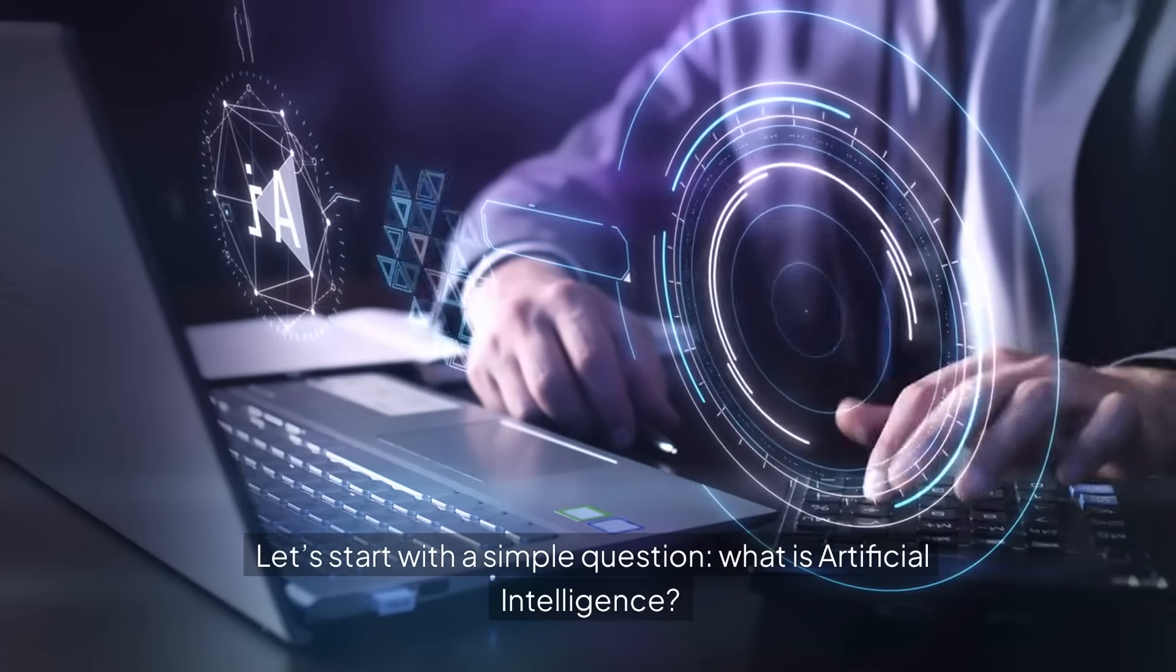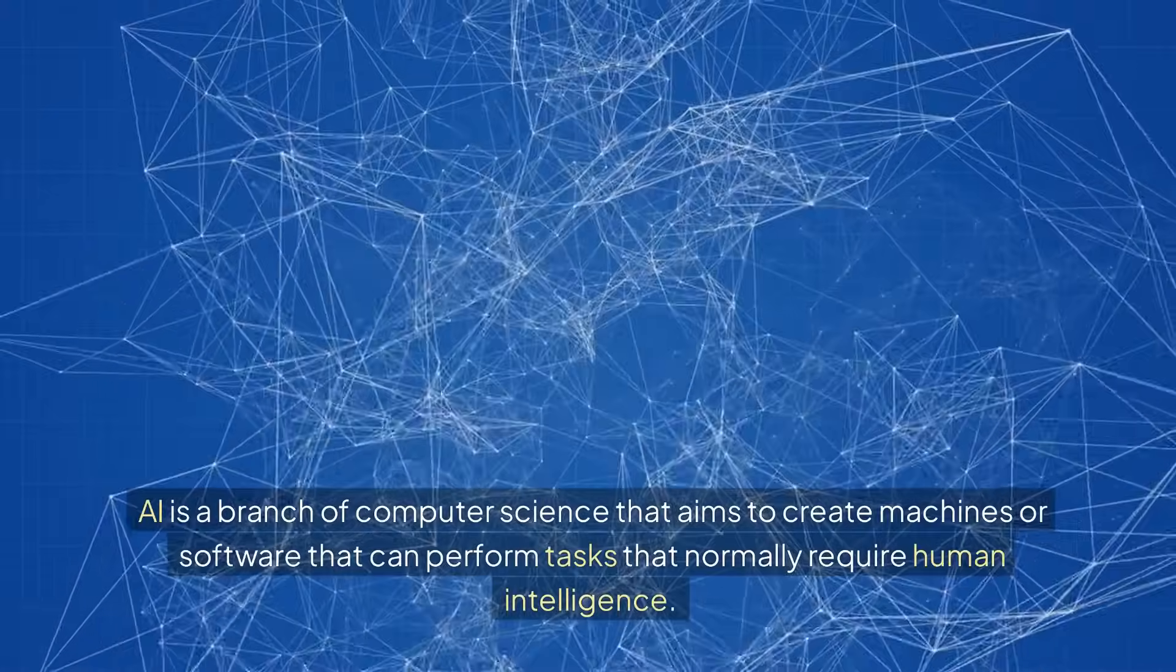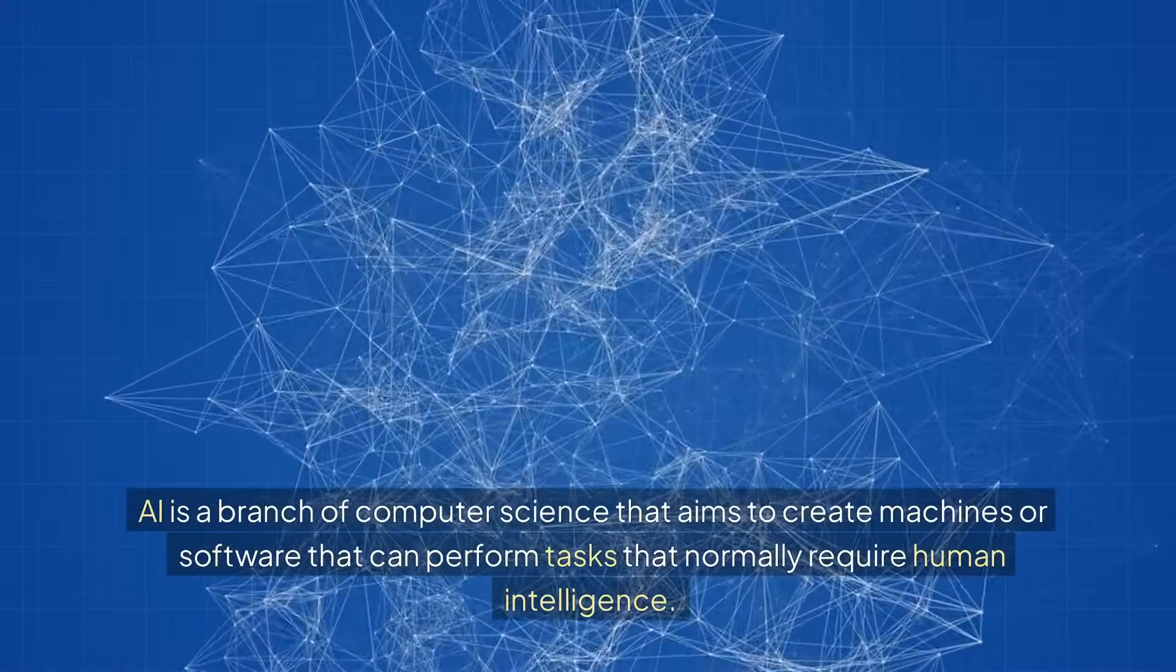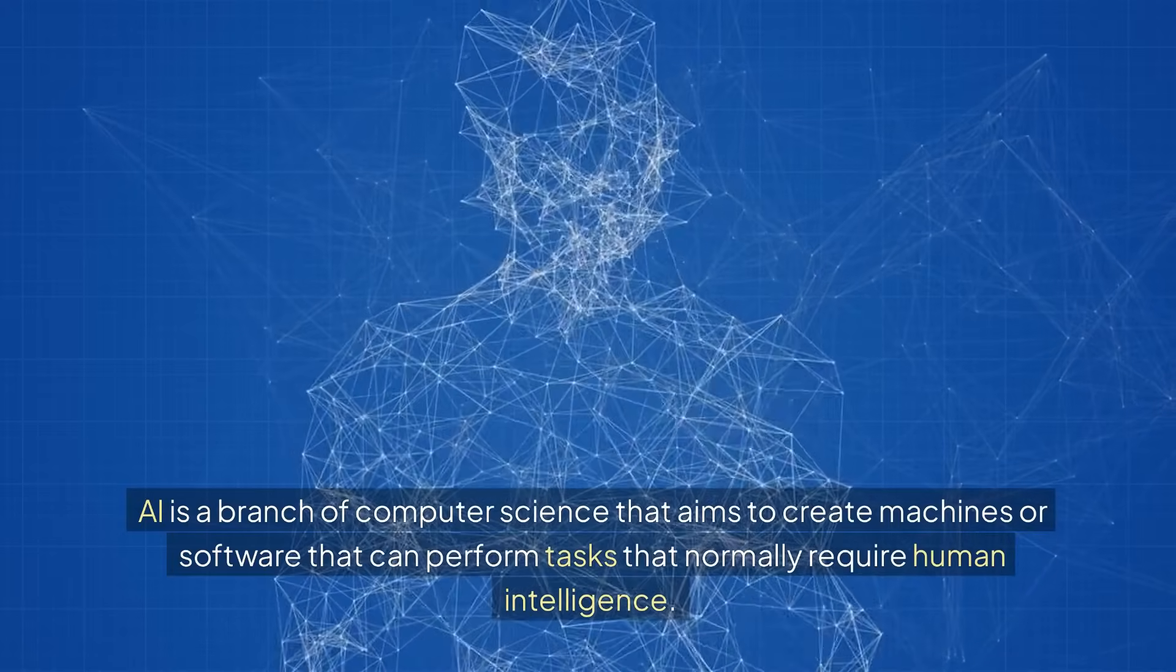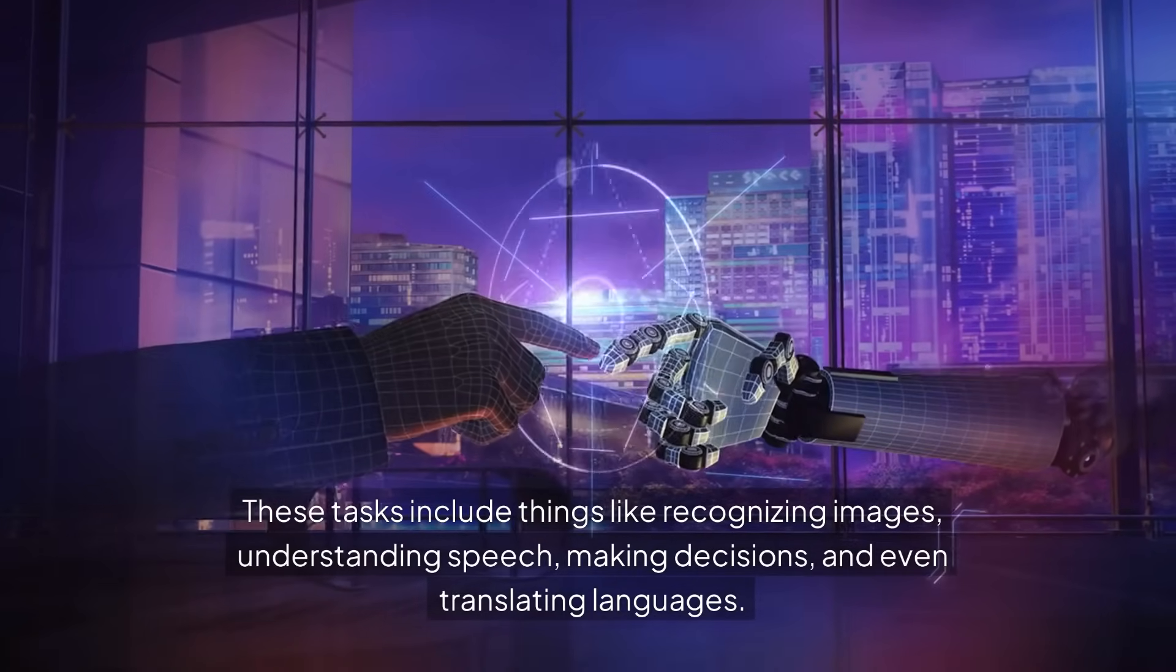What is artificial intelligence? Let's start with a simple question: what is artificial intelligence? AI is a branch of computer science that aims to create machines or software that can perform tasks that normally require human intelligence. These tasks include things like recognizing images, understanding speech, making decisions, and even translating languages.